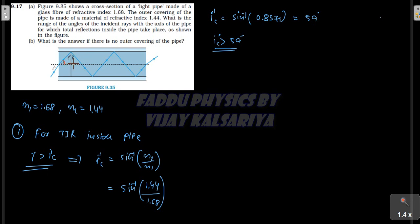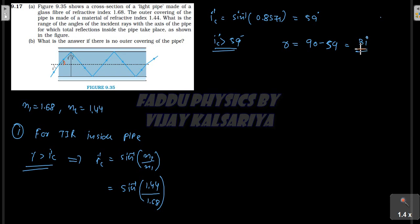Now we find R's values. R should be maximum, so R maximum equals 90 minus 59 degrees. The whole triangle angle is 90, so this value should be greater than 59. Therefore R should be maximum 31 degrees, and R should be less than 31 degrees so that our i-dash-C condition will be satisfied.